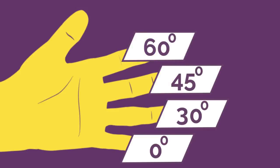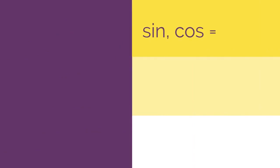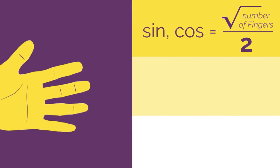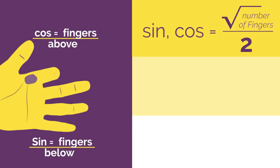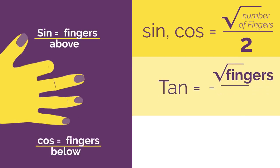And just remember, for sine and cos, it's root fingers divided by 2. Sine is root fingers below the bent finger and cos is root fingers above the bent finger. And for tan, you just flip it over and it's root fingers divided by root fingers.